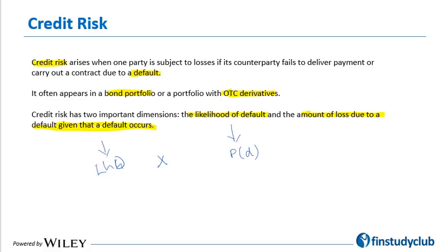When we combine loss given default with probability of default, we get expected loss, which gives us a good sense of the credit risk exposure. For instance, if the probability of default is 5% and the loss given default is 40%, there is an expected loss of 2% as far as my credit portfolio is concerned.